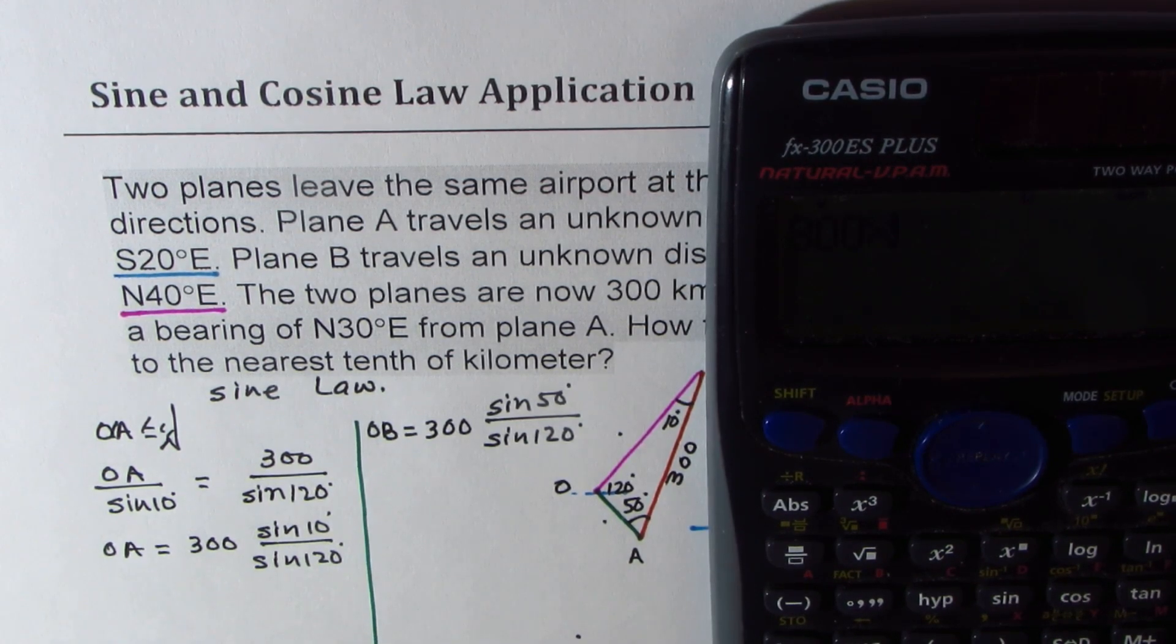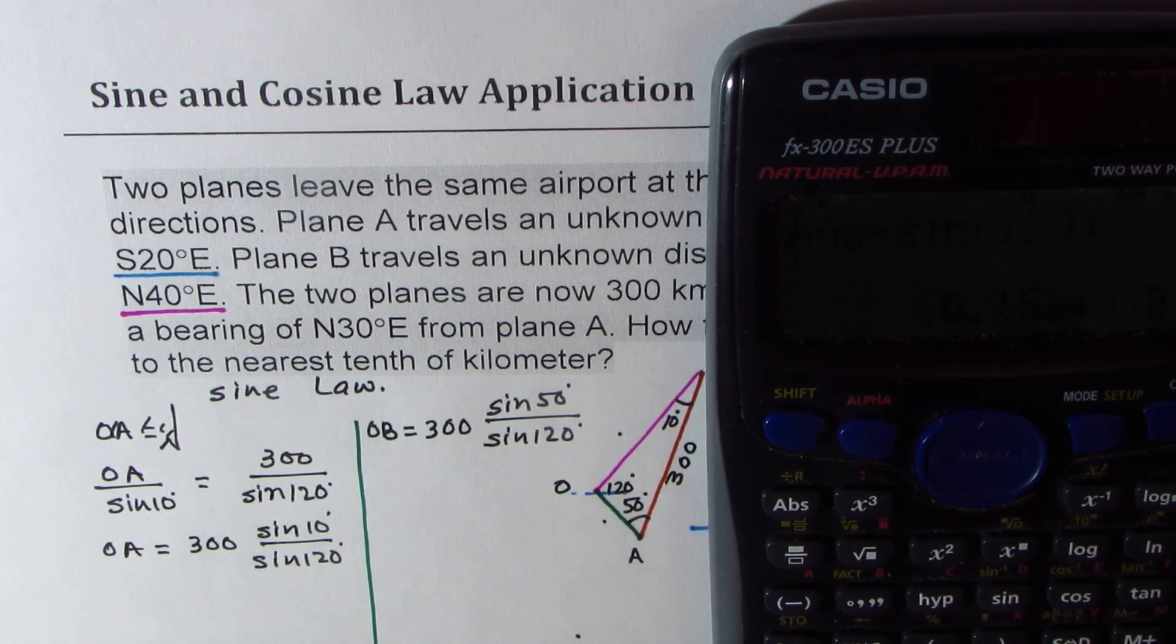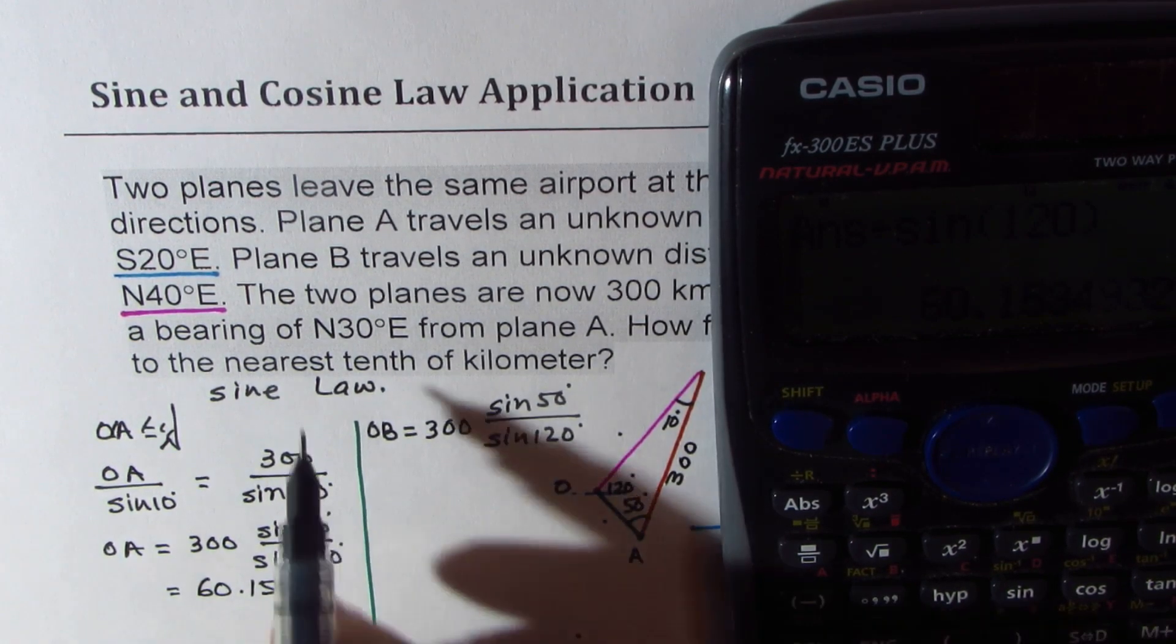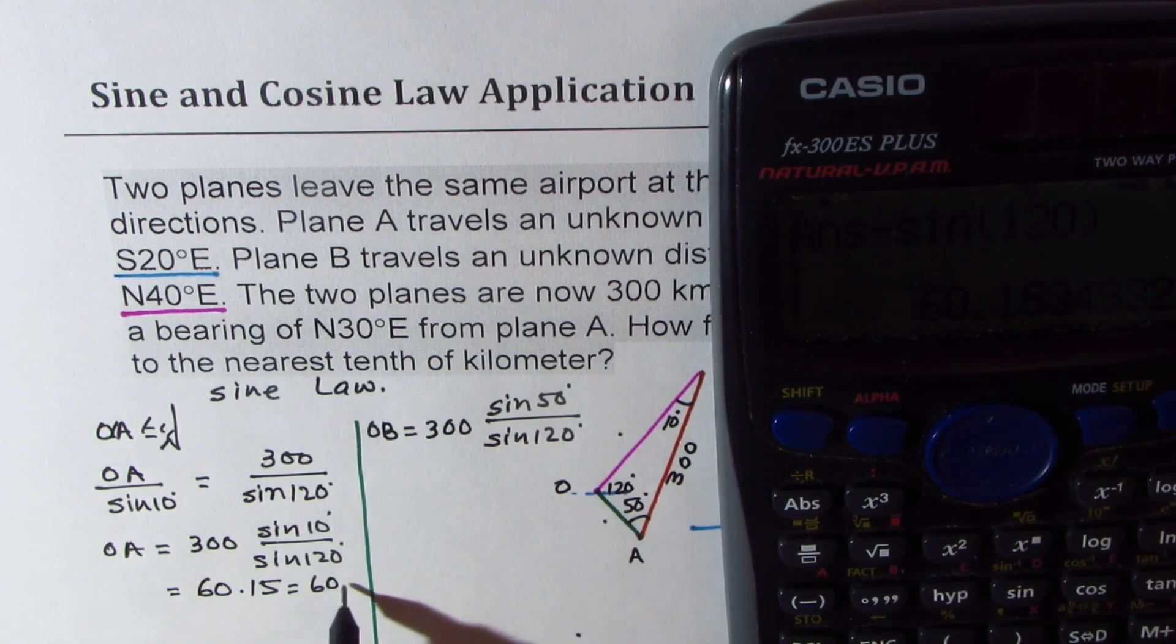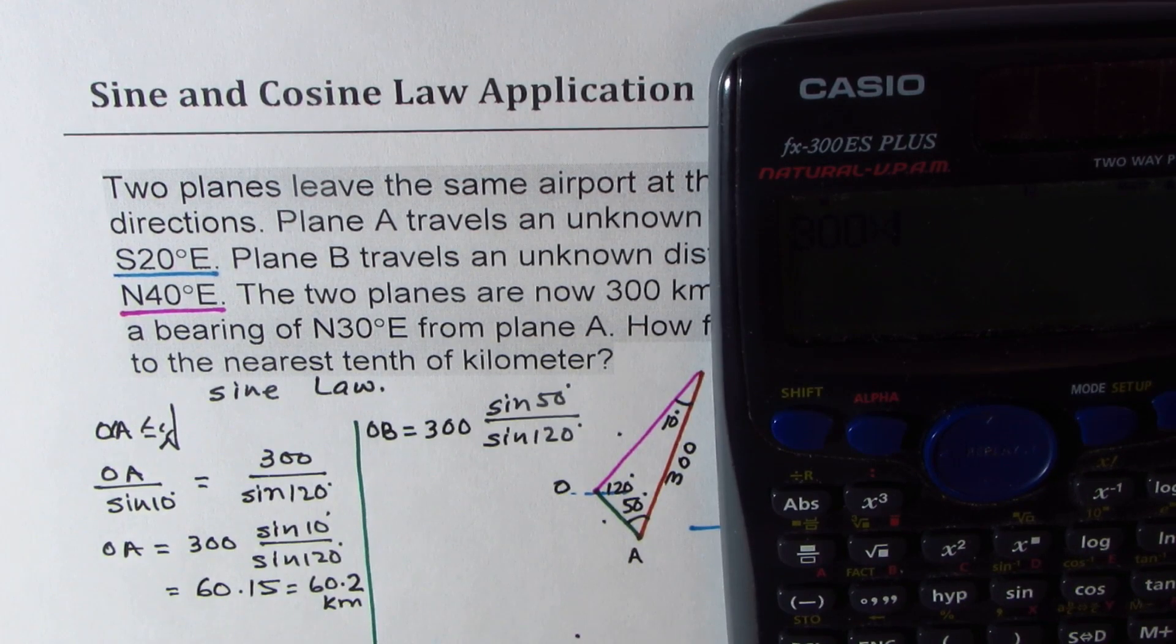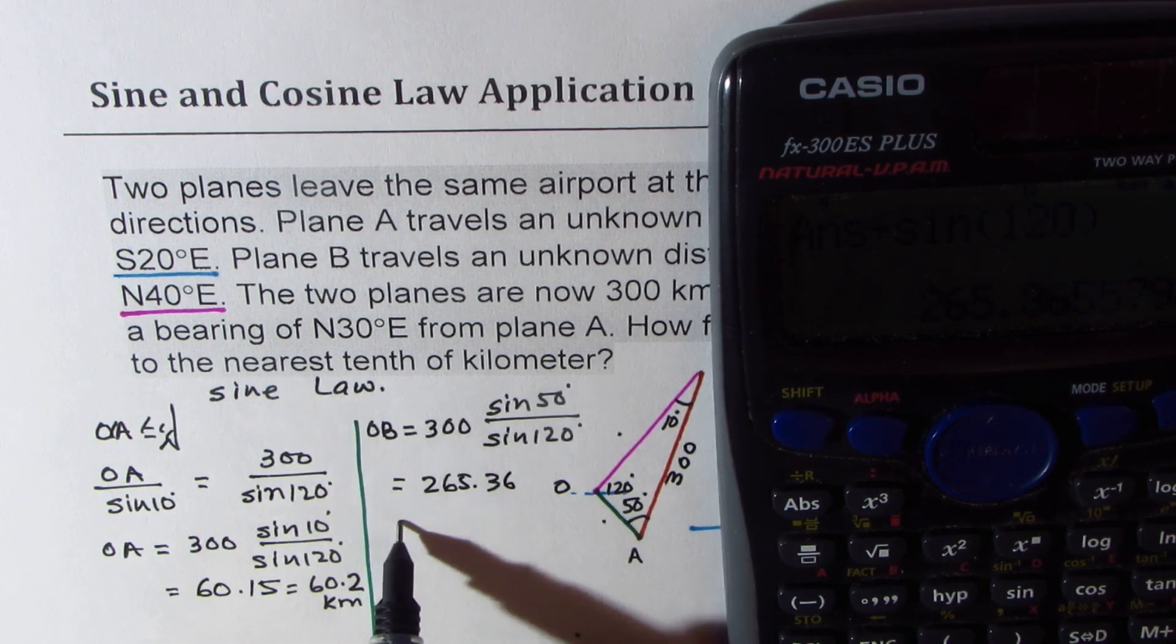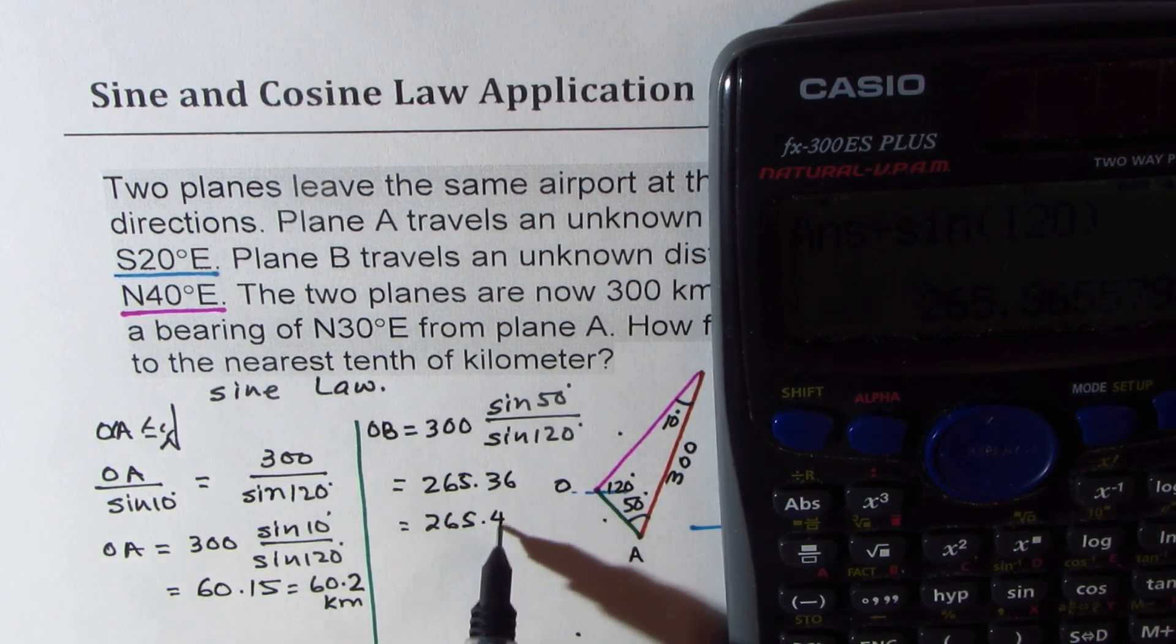So we have 300 times sine of 10 degrees divided by sine of 120 degrees. So for the first one, we get OA as 60.15. Nearest tenth means I will write this as 60.2 kilometers. For 300 times sine of 50 degrees divided by sine of 120 degrees, that gives us distance of 265.36 or 265.4 kilometers.